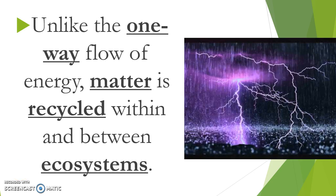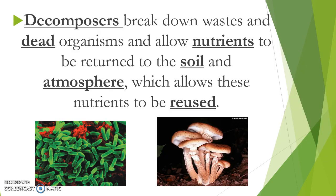Energy is flowing through an ecosystem one way. It starts with the sun, gets absorbed by plants, and then is transported from one trophic level to another. However, matter, on the other hand — which is what we're really interested in in these notes — is actually recyclable. And it's very important that it is recyclable because we do not have an unlimited supply of it coming to us from something like the sun. So how do we get these nutrients, these atoms, cycled throughout an ecosystem?